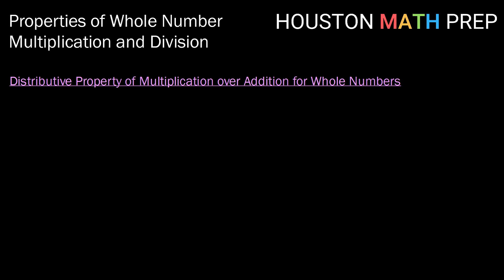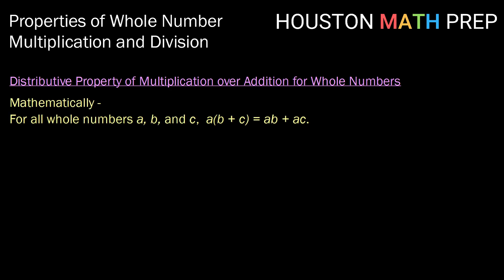Now that we are adding the concept of multiplication and later division to our already established operations of addition and subtraction, we want to know how those operations interact with each other. That brings us to the distributive property of multiplication over addition for whole numbers. Mathematically, that property says for all whole numbers a, b, and c, a times the quantity b plus c is the same as a times b plus a times c.